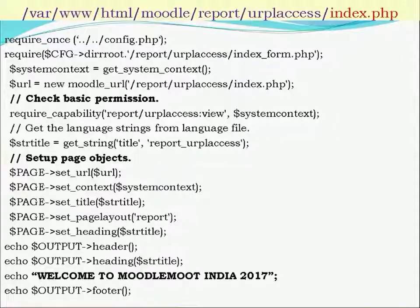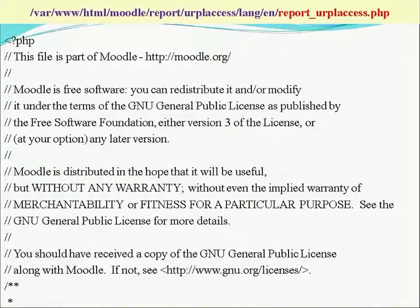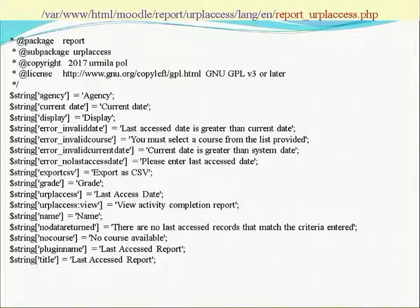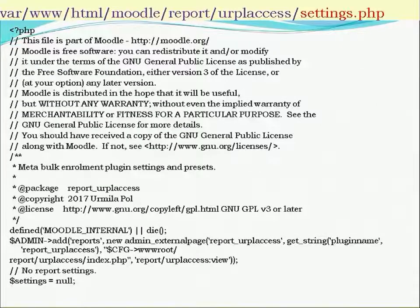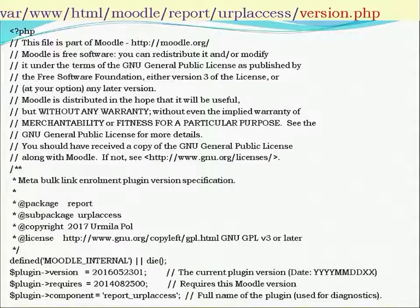The settings.php and version.php files are also required, along with language string files. In language strings, we set values used in our programs. settings.php is required to open the plugin page — it gives the path using admin role and uses an add function with the plugin type parameter and a new_admin_external_page function, which takes capability, plugin name, path of the plugin, and setting = null (meaning no settings for the page). version.php contains the plugin version, required version, current version, component name, plugin type, and plugin name.